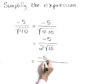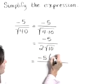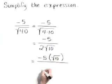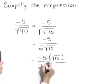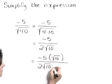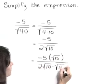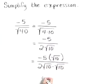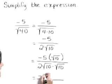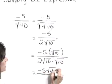So negative 5 times the square root of 10 in the numerator and 2 times the square root of 10 times the square root of 10 in the denominator. This gives negative 5 times the square root of 10 in the numerator.